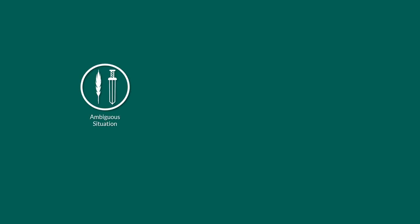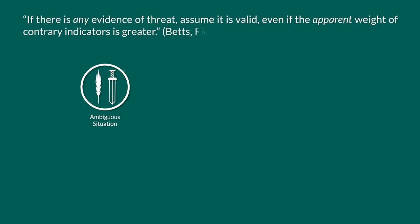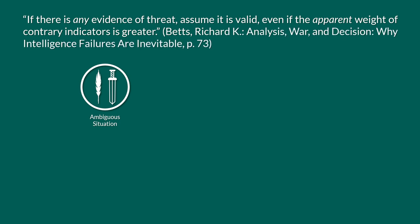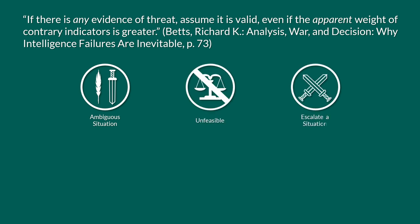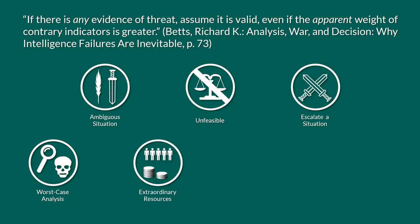There are many approaches to deal with ambiguous situations. One is to assume the worst case scenario in case of a threat: if there is any evidence of threat, assume it is valid, even if the apparent weight of contrary indicators is greater. The complication is that this only seems a good idea in hindsight, but without hindsight it is unfeasible, or might even escalate a situation that was not problematic at all. Worst case assumptions are often not feasible because they usually require extraordinary resources, and can also lead to escalation, because the actions taken may be perceived as aggressive by the enemy.